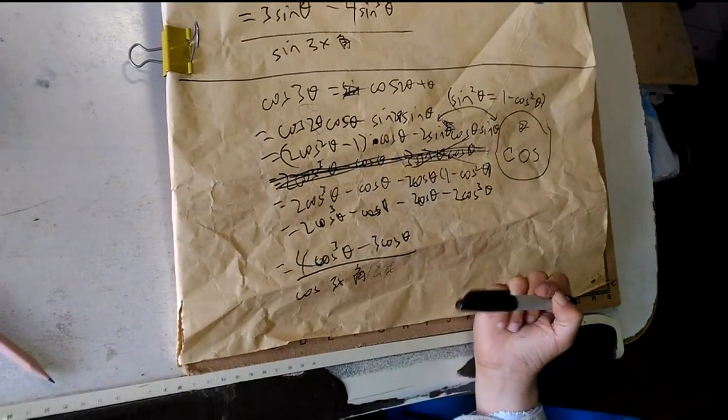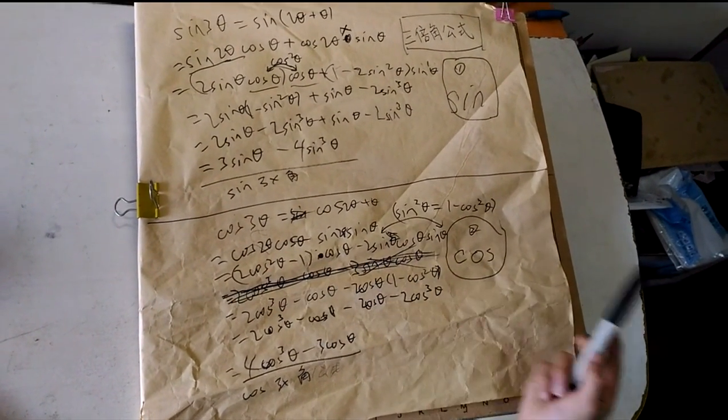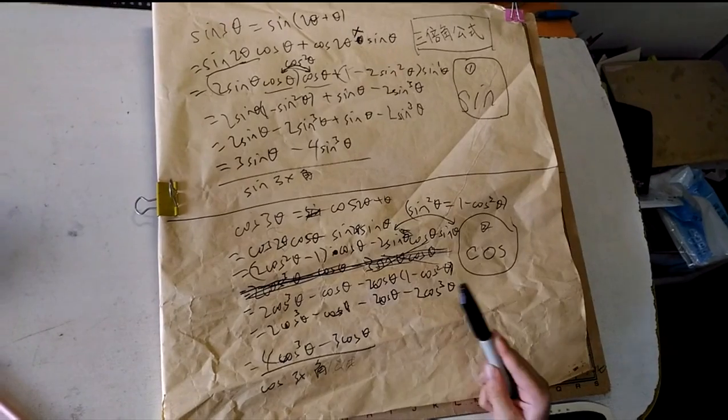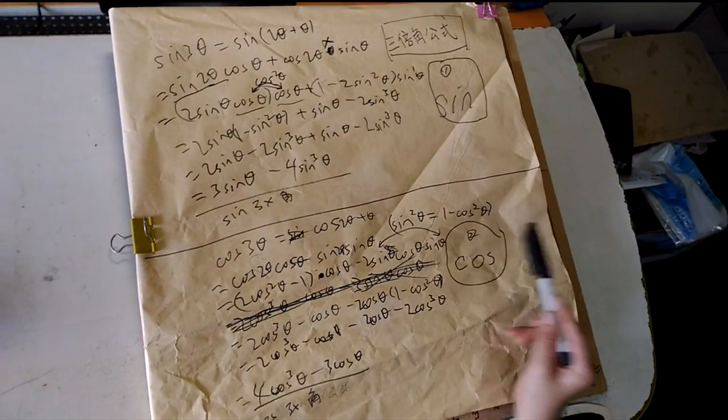Do you remember the addition formula for cosine? It's cosine cosine minus sine sine. That's the formula we're using. So 2θ, θ, 2θ, θ, all works out.